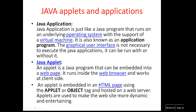Let us see the difference between Java applets and applications. An application is a Java program that runs under the underlying operating system with the support of a virtual machine. In general, simple programs developed in Java run on the machines — that is called an application. An applet is a Java program that can be embedded into web pages. It runs inside the browser and works at the client side. An applet is embedded in an HTML page using the applet code or object tag.